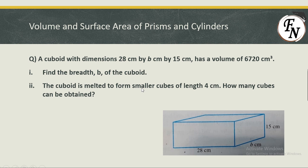The second part states that the cuboid is melted to form smaller cubes of 4 cm side length. We need to calculate how many cubes can be made. This part will be explained a bit later — first, let's solve part one, which is finding the breadth.